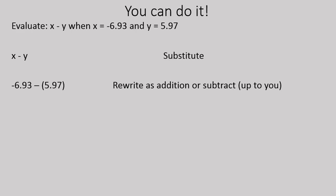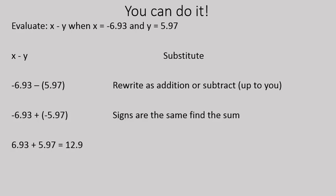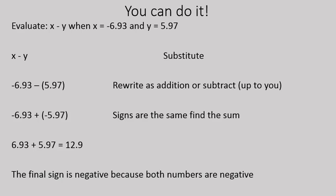So I have negative 6.93 minus 5.97. I'm going to rewrite this as an addition question. Instead of subtracting a positive number, now I'm adding a negative number. The signs are the same — I'm adding two negative numbers — so I'm going to find the sum and add them together. 6.93 plus 5.97 gives me 12.9. The final sign will be negative because both numbers are negative, so my solution is negative 12.9.